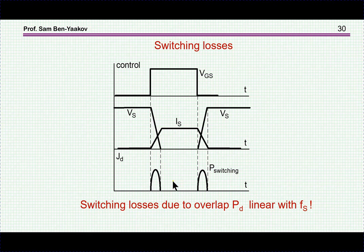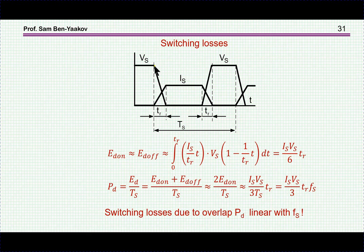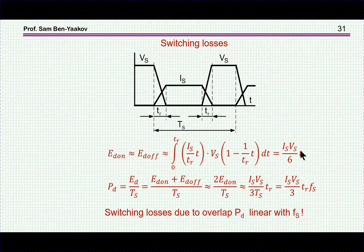The question is: what is the amount of energy lost here? One way is to assume a simple, approximate picture of what is really happening. If I define this transition time as t_r, I can express each waveform as a function of time, take the product of the two, and integrate. This gives the energy per transition. If we assume the energy during turn-on and turn-off are about the same, the total switching loss will be twice this value.